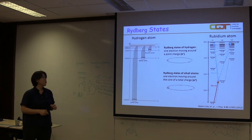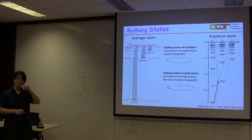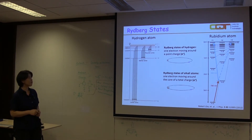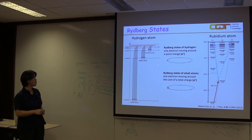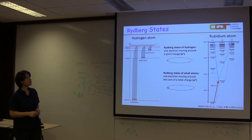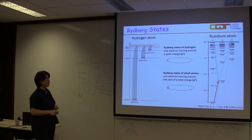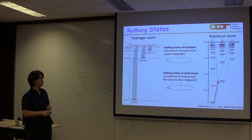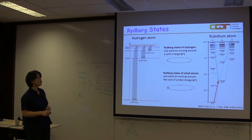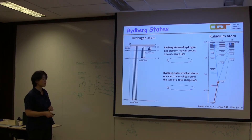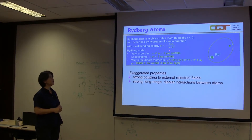Rydberg atoms are highly excited atoms — atoms with at least one electron in a very highly excited state. Here is the energy level of hydrogen atoms, and here is the energy level of rubidium. As far as highly excited states go, which are Rydberg states, they are pretty much very similar to each other, except for one difference. For alkaline atoms, which have a core of total charge E-plus rather than a single proton, an electron coming close to the atomic core has its energy level somewhat reduced. This is where you see this kind of energy level structure for low-L states, which are slightly shifted relative to high-L states — similar to hydrogen. This is well described by the so-called quantum defect.